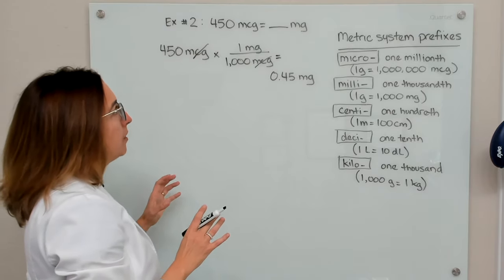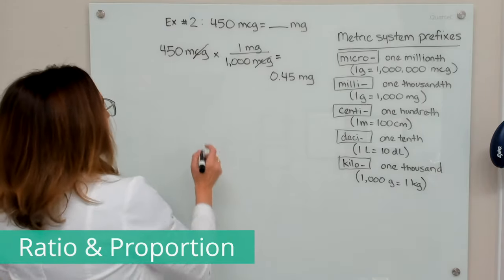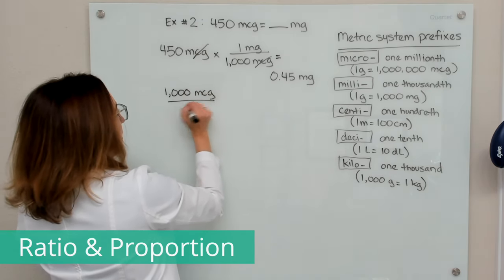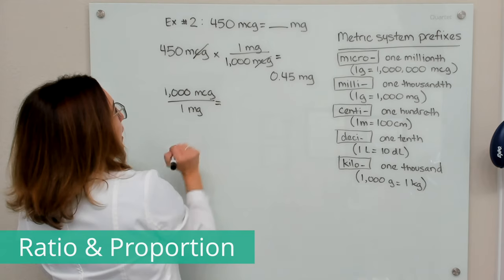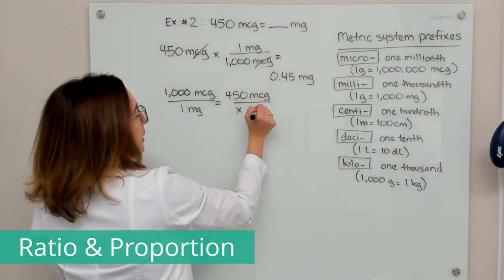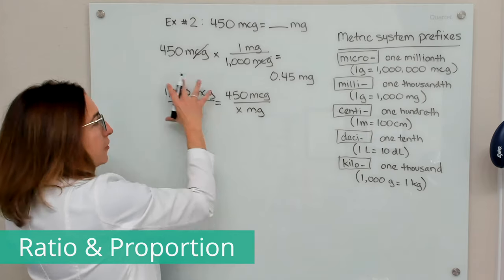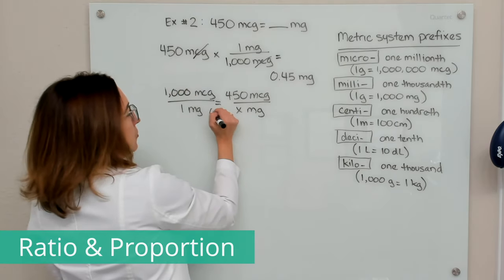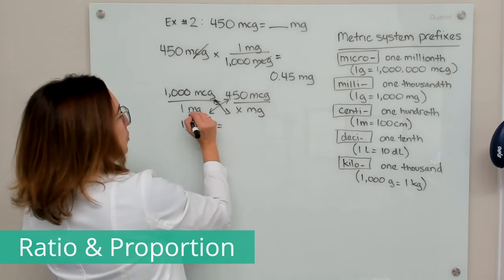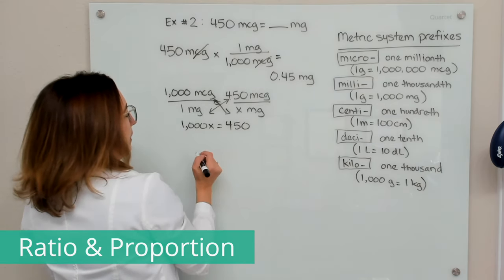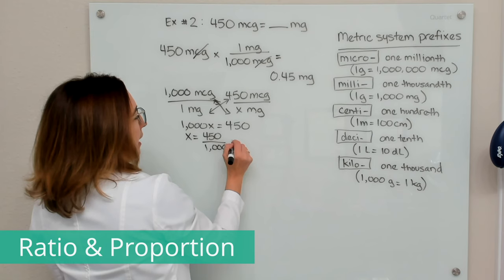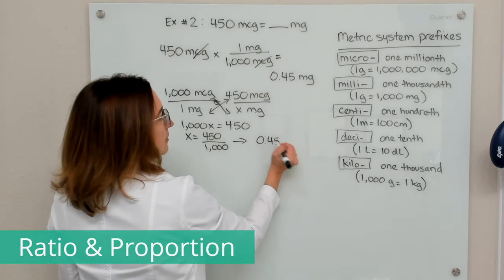Let's work through this problem with ratio and proportion. The known ratio is 1,000 micrograms equals 1 milligram. We want to know: for 450 micrograms, how many milligrams is that? Cross multiplying gives us 1,000x equals 450, so x equals 450 divided by 1,000, and we end up with 0.45 milligrams — the same answer.